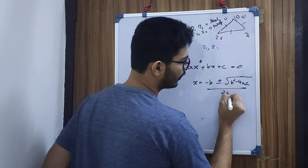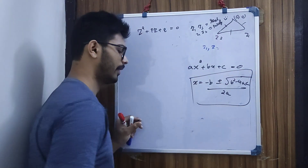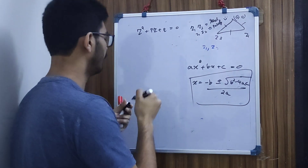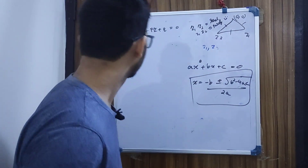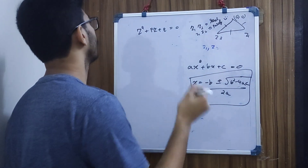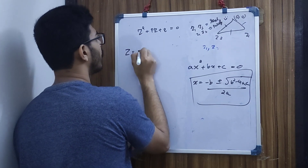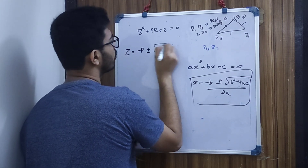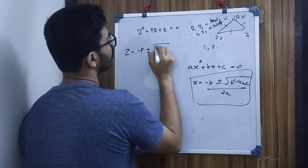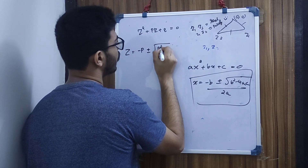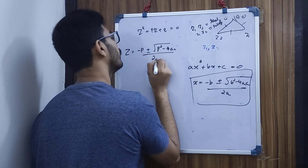I will apply the quadratic formula: z = (−b ± √(b² − 4ac)) / 2a.